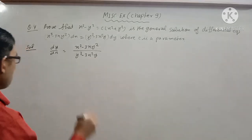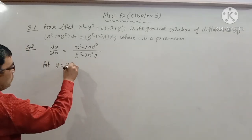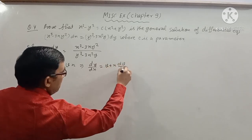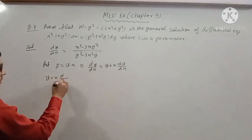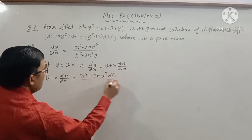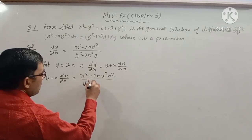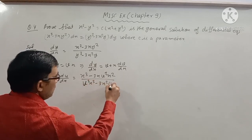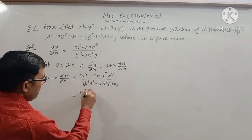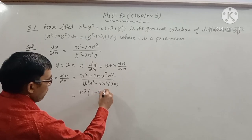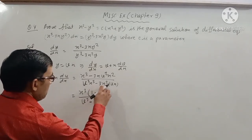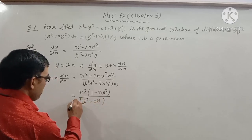This is the general solution. We use the substitution y = vx, so dy/dx = v + x(dv/dx). Substituting, v + x(dv/dx) equals (-3v²x²) upon (v³x³ - 3x²vx). Taking x³ common from numerator and denominator, we get (1 - 3v²) divided by (v³ - 3v).